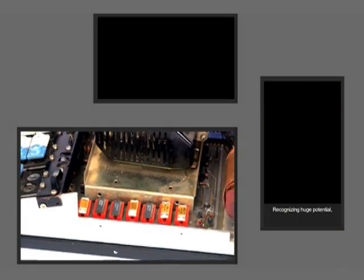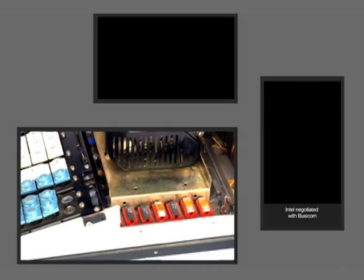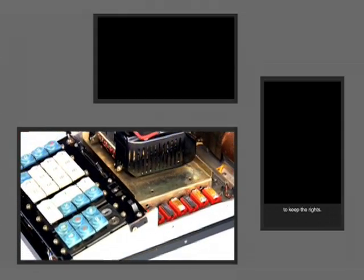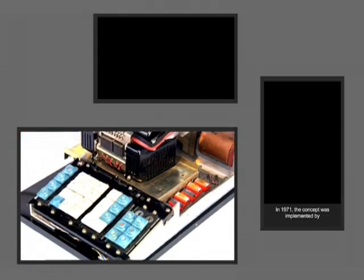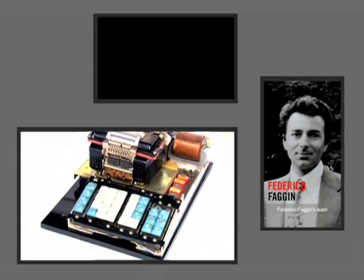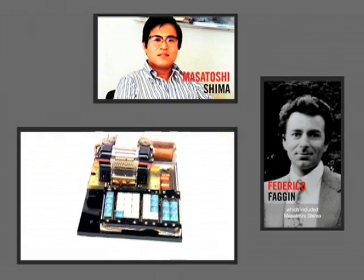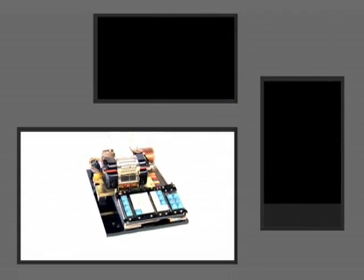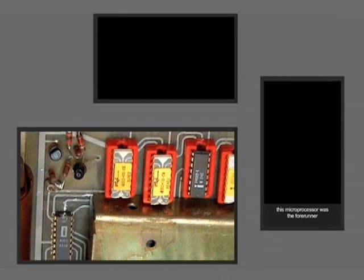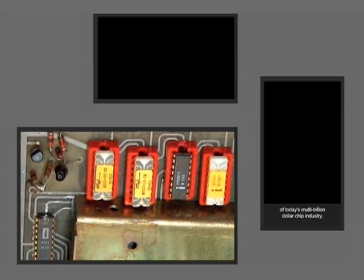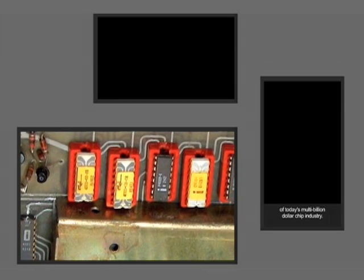Recognizing huge potential, Intel negotiated with Busicom to keep the rights. In 1971, the concept was implemented by Federico Faggin's team, which included Masatoshi Shima. This microprocessor was the forerunner of today's multi-billion dollar chip industry. The age of the microprocessor had begun.